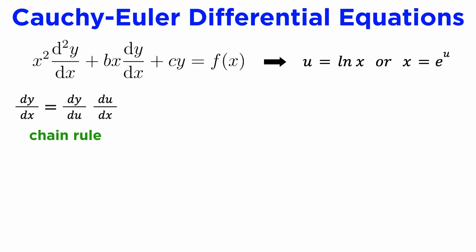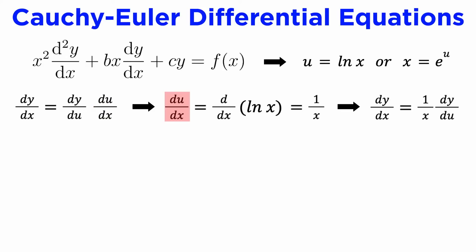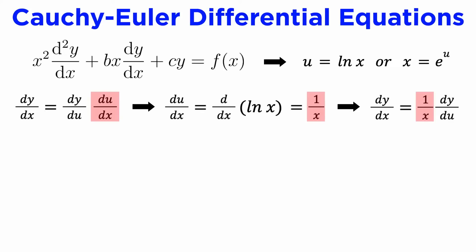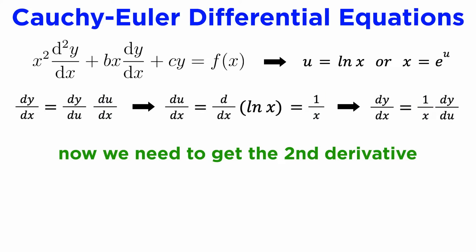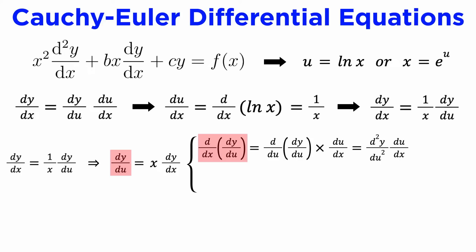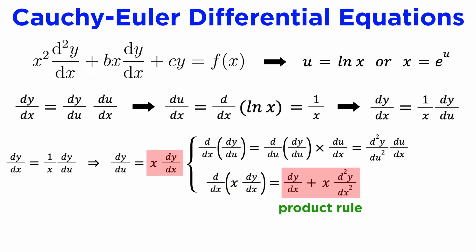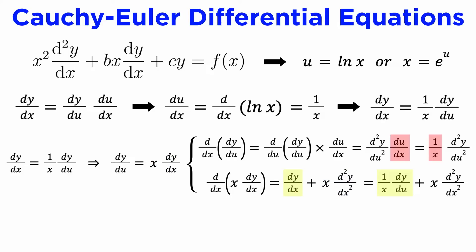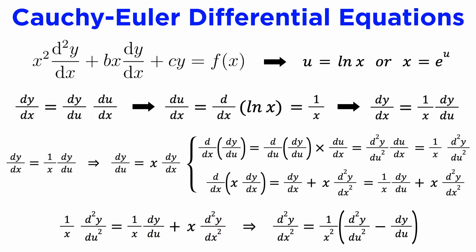To find dy/dx, we use the chain rule to write dy/dx as dy/du times du/dx, where du/dx is the derivative of log of x, which is 1 over x. To find d²y/dx², we need to take our last result and rearrange it to get dy/du equals x times dy/dx, and then differentiate both sides. On the left we can use the chain rule, and on the right we can use the product rule. Then sub in the known expressions for du/dx and dy/dx, and finally equating both sides leads to the second derivative we need.